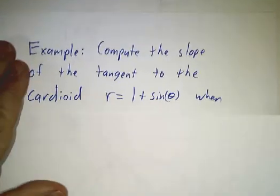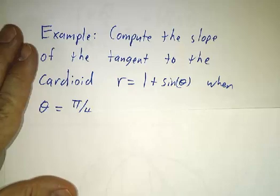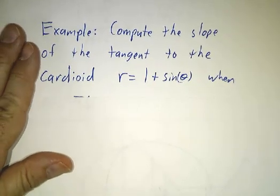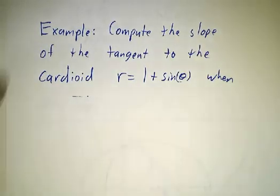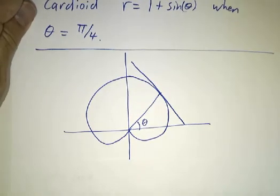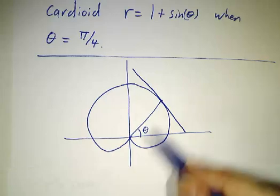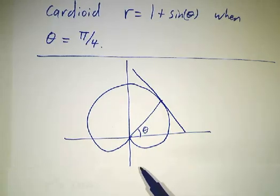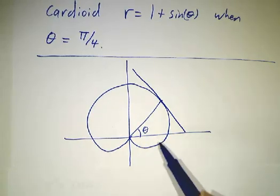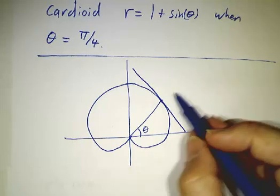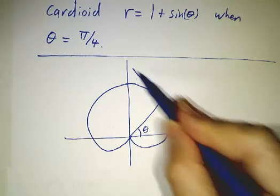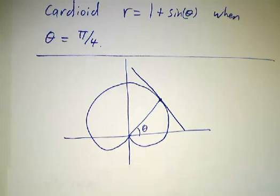For our next example, we're going to look at a curve that's called a cardioid. Cardioid is r equals 1 plus sin θ. And it looks like this. If we had done 1 minus sin θ, it would have looked like a heart, which is why it's called a cardioid. Now it looks like an upside down heart. And we want to figure out what is the slope of the tangent line when theta equals π/4.